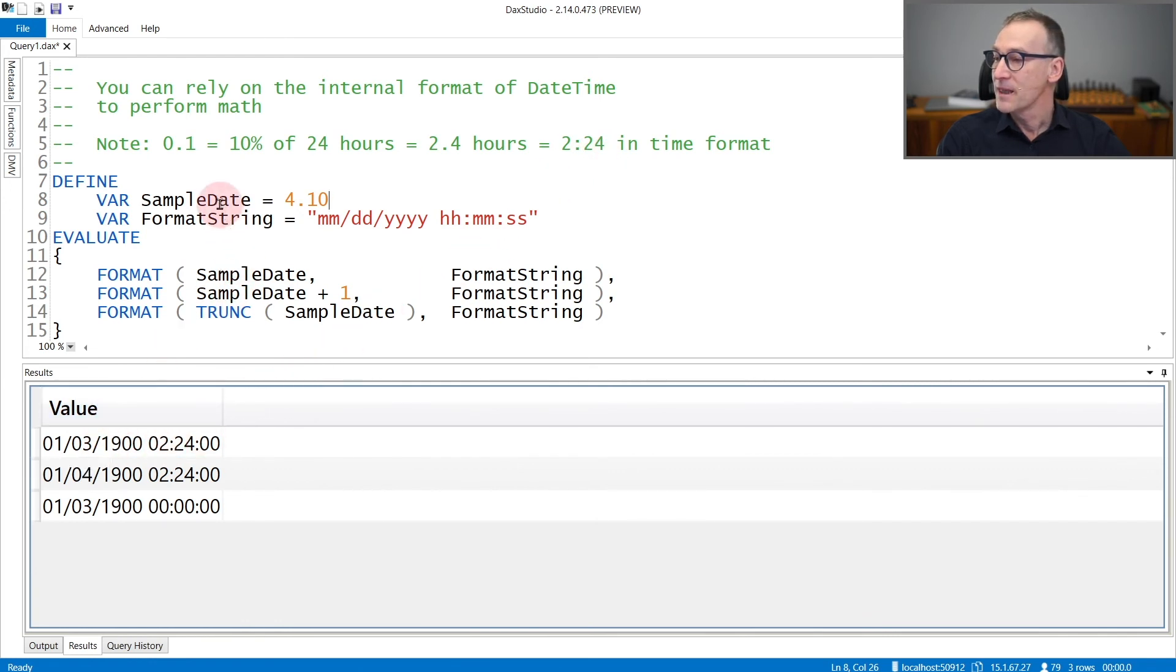Indeed, you see that sampleDate formatted as a string is the 3rd of January, 1900 at 2:24 in the morning. If you add 1, that goes to the 4th of January, the day after.